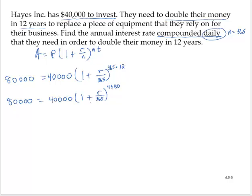So now what's happening to the r variable? We're dividing by 365, adding 1, raising to a power, multiplying by 40,000, and getting 80,000. Let's undo those in the inverse order. I'll divide by 40,000. So then 2 is equal to 1 plus r over 365 to the 4,380th power.